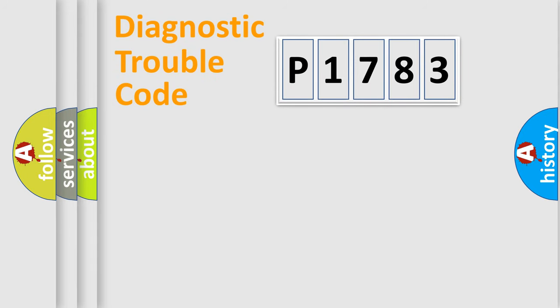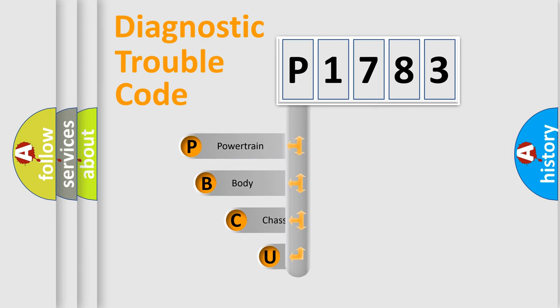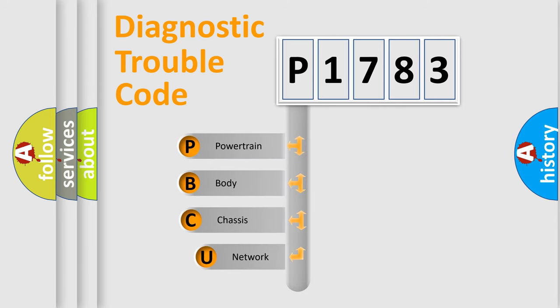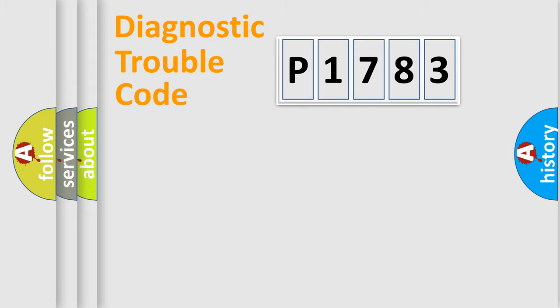Let's do this. First, let's look at the history of diagnostic fault code composition according to the OBD2 protocol, which is unified for all automakers since 2000. We divide the electric system of an automobile into four basic units: Powertrain, body, chassis, network.